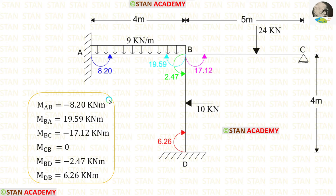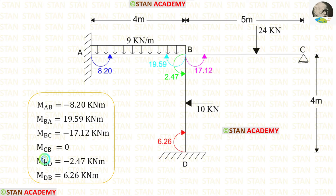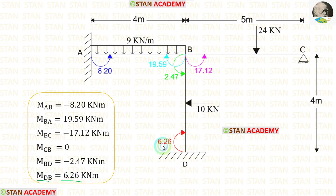We have now found all of the moments. M_AB is negative, meaning it acts anti-clockwise. M_BA is positive, meaning it acts clockwise. M_BC is negative (anti-clockwise). M_CB is 0. M_BD is negative (anti-clockwise). M_DB is positive, meaning it acts in the clockwise direction.